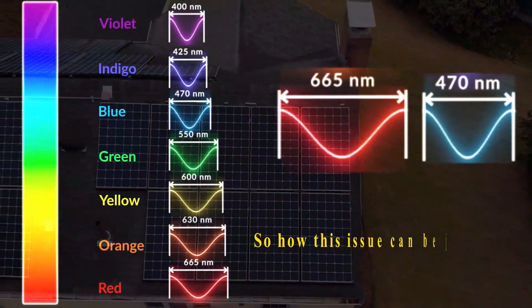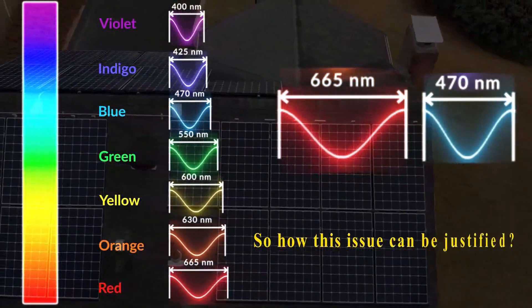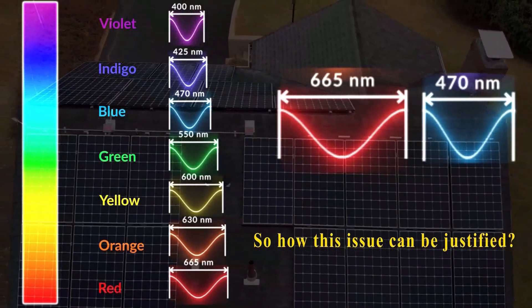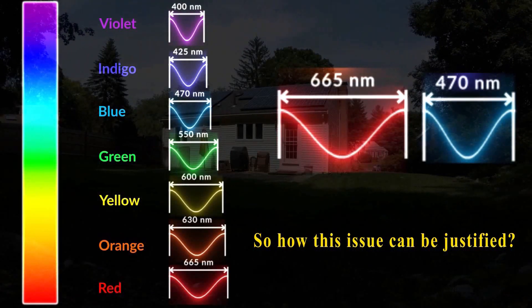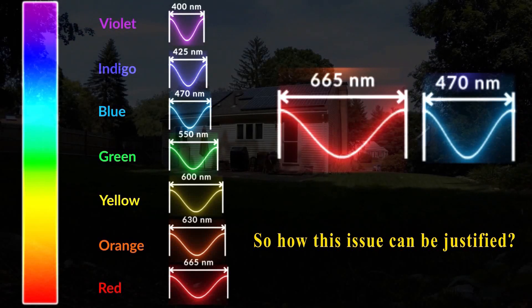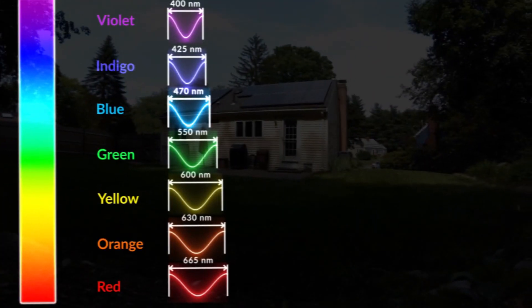And therefore, in solar cells, blue light should generate more electrical energy than red light. But in existing experiments, the opposite happens. So, how could this be justified by wave-particle duality theory?